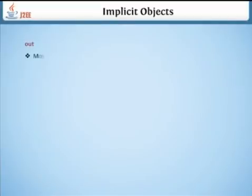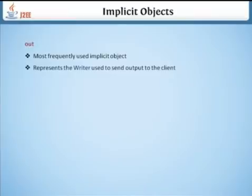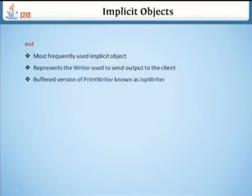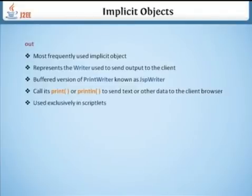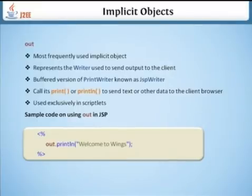Out is the most frequently used implicit object. It represents the writer used to send output to the client — a buffered version of PrintWriter known as JSP writer. Call its print or println methods to send text or other data to the client browser. Use it exclusively in scriptlets.